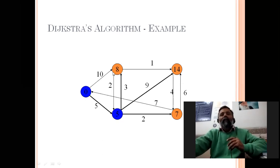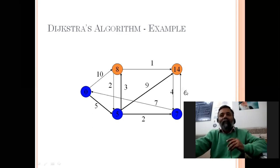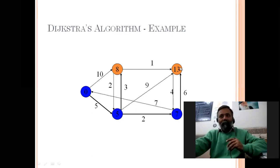Now in the priority queue we have three nodes: values 8, 14, and 7. The lowest is 7, so that node is deleted. Applying relax: 7 + 6 = 13, which is less than 14, so that value is updated to 13. The other adjacent node has no edge, so its value stays the same. The predecessor of the node with distance 13 is now updated to this node.